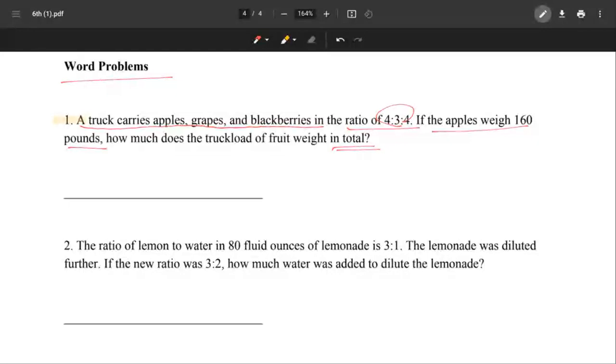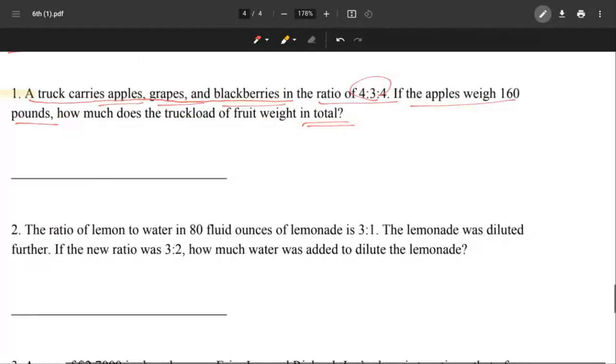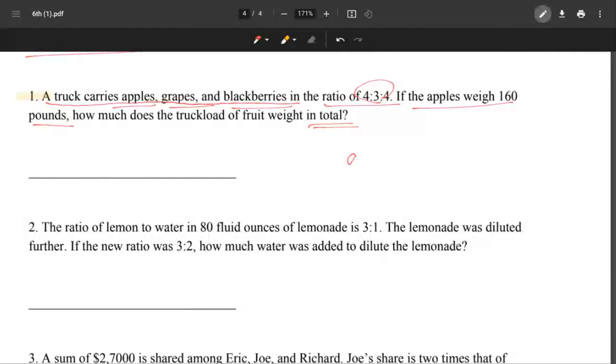We're looking for the total weight of apples, grapes, and blackberries. They're in the ratio 4 to 3 to 4. We're given the weight of the apples, which is 160. That means blackberries are also 160, because it's 4 to 4. Now we've got to figure out the weight for the grapes.